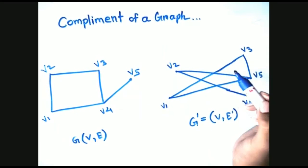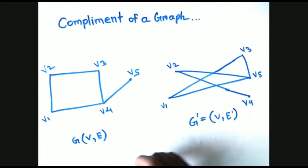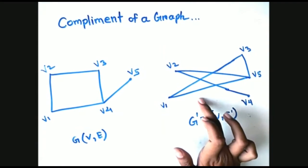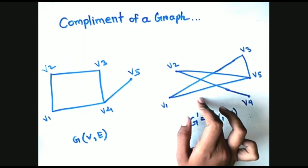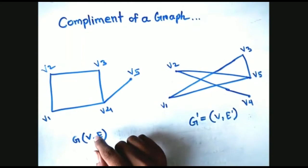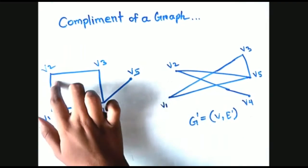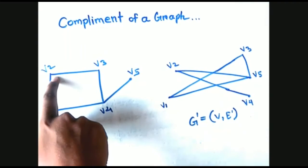In this way we can draw the complement of graph G as shown here. We have to join the edges between vertices that are not given in graph G.